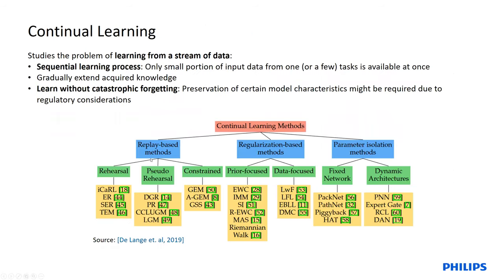We want to tackle this problem with techniques from continual learning. Continual learning addresses the problem of learning from a stream of data in a sequential fashion, where only small portions of training data related to one task are available at once. We want to gradually extend the model's knowledge and learn without catastrophic forgetting. In the medical context this is very desirable because we want to preserve certain model characteristics, for example due to regulatory constraints.